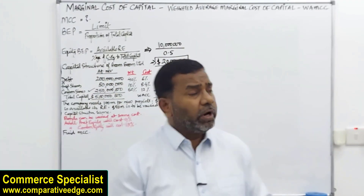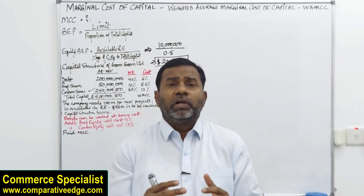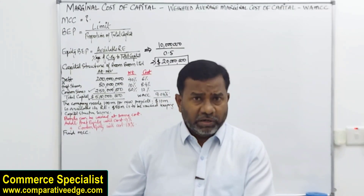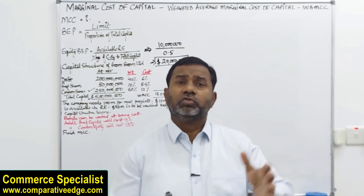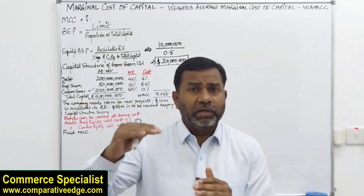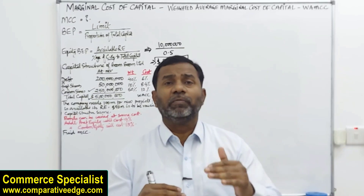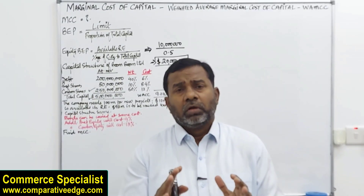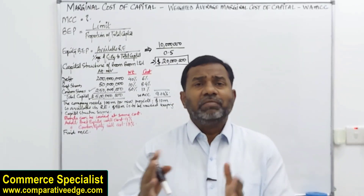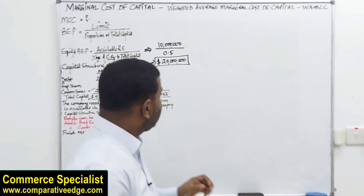What does the equity break-even point of 20 million mean? When the company goes for additional finance, we need 100 million total, of which 10 million is available in retained earnings, so 90 million must be raised. For the first 20 million, the marginal cost of capital will be lower. For the remaining additional funds beyond 20 million, the marginal cost of capital will be higher.